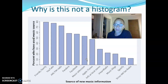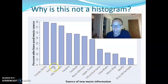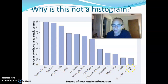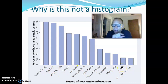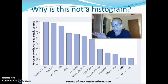Whereas on a histogram, you will have quantitative data. It could be time, age, height, weight — something quantitative along the bottom. And that kind of forces the histogram to follow a certain order, and then we can see patterns in that order.